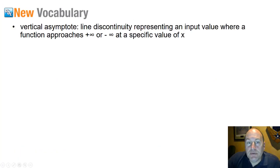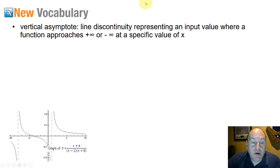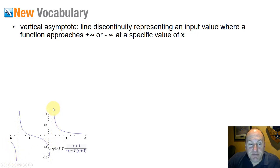Let's look at some vocabulary terms. A vertical asymptote is a vertical line, usually represented with a dash, that represents a discontinuity as a function is approaching positive or negative infinity at a specific value of x. It looks like one of the pictures shown here. At a certain specific value of x, the function is either approaching negative infinity, as the far left-hand version is doing, or approaching positive infinity, as the far right-hand is doing at approximately x equals 1.